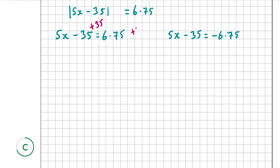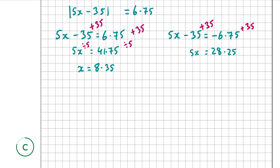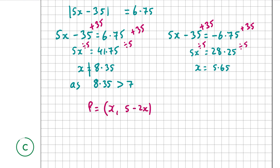To remove the absolute value sign, we put plus or minus before the 6.75. So 5x minus 35 equals 6.75, giving 5x equals 41.75, so x equals 8.35; and 5x minus 35 equals minus 6.75, giving 5x equals 28.25, so x equals 5.65. Now x cannot be 8.35 as it's greater than 7, the x-value of B, so x must equal 5.65.